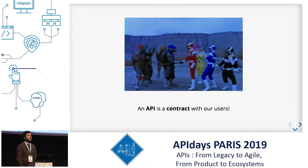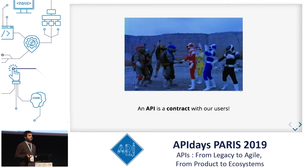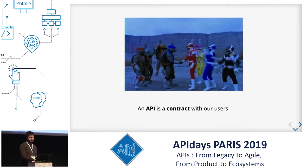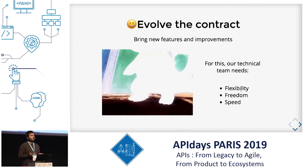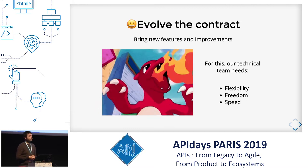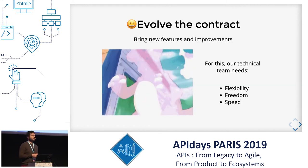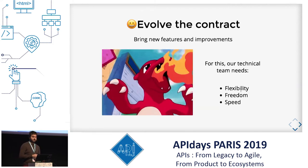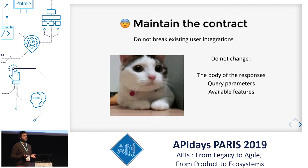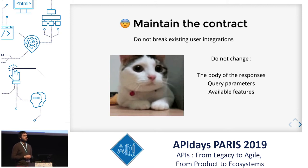But let's go back to our subject. What's an API? An API is a contract — a contract with your users, the people that are going to use your API to fetch data. But this contract, you as an API maintainer, you want to evolve it. You want to add new features, make things more clear, and be able to evolve this contract very fast. Your technical team doesn't want to wait a year just to deliver a new feature. So for that, you need flexibility and freedom. But the problem is that at the same time, you have to maintain your contract — you don't want to break things for users. You cannot modify responses, query parameters, and available features.